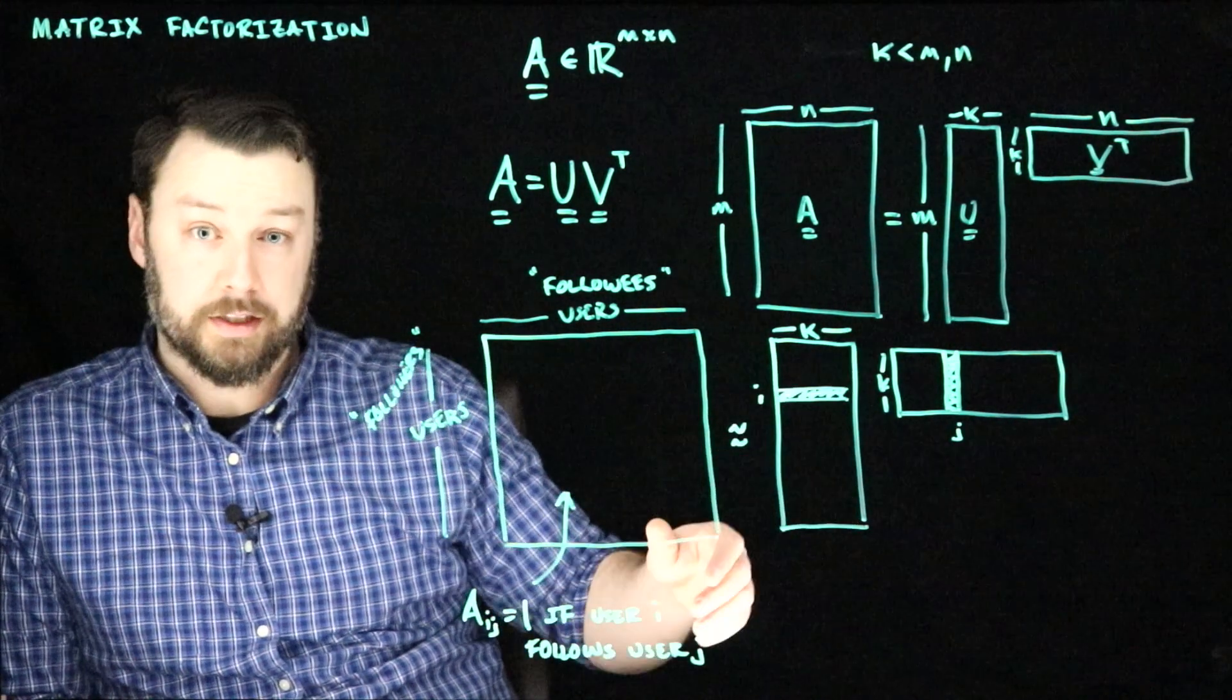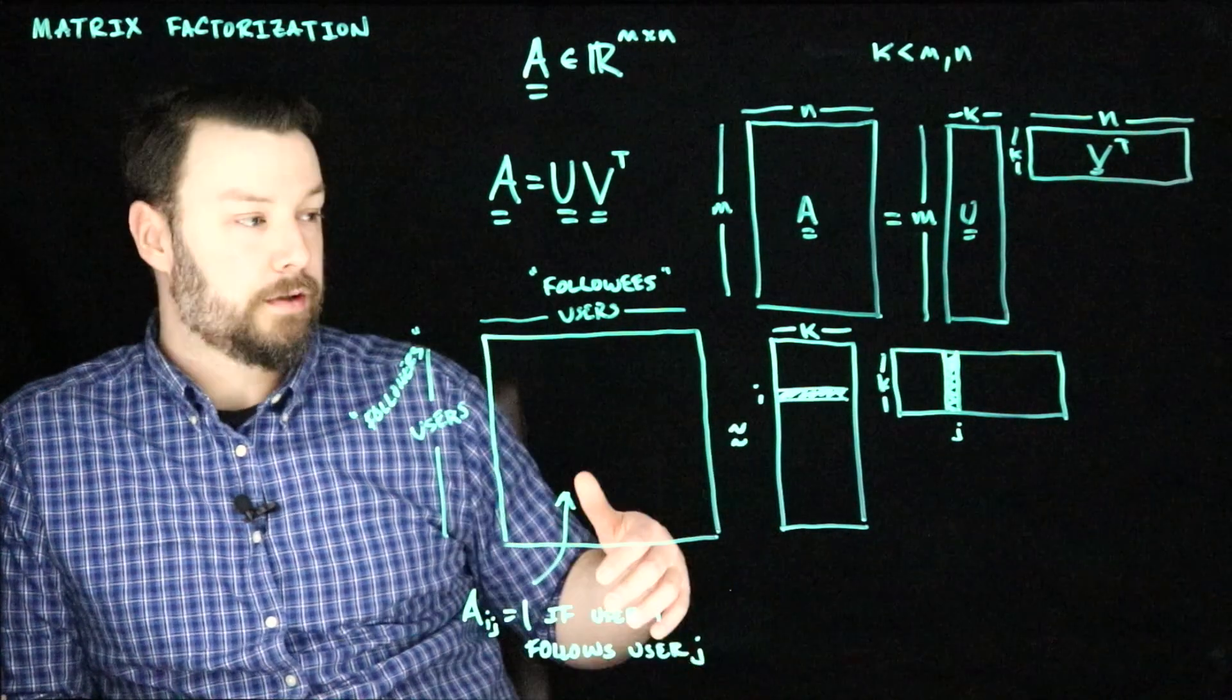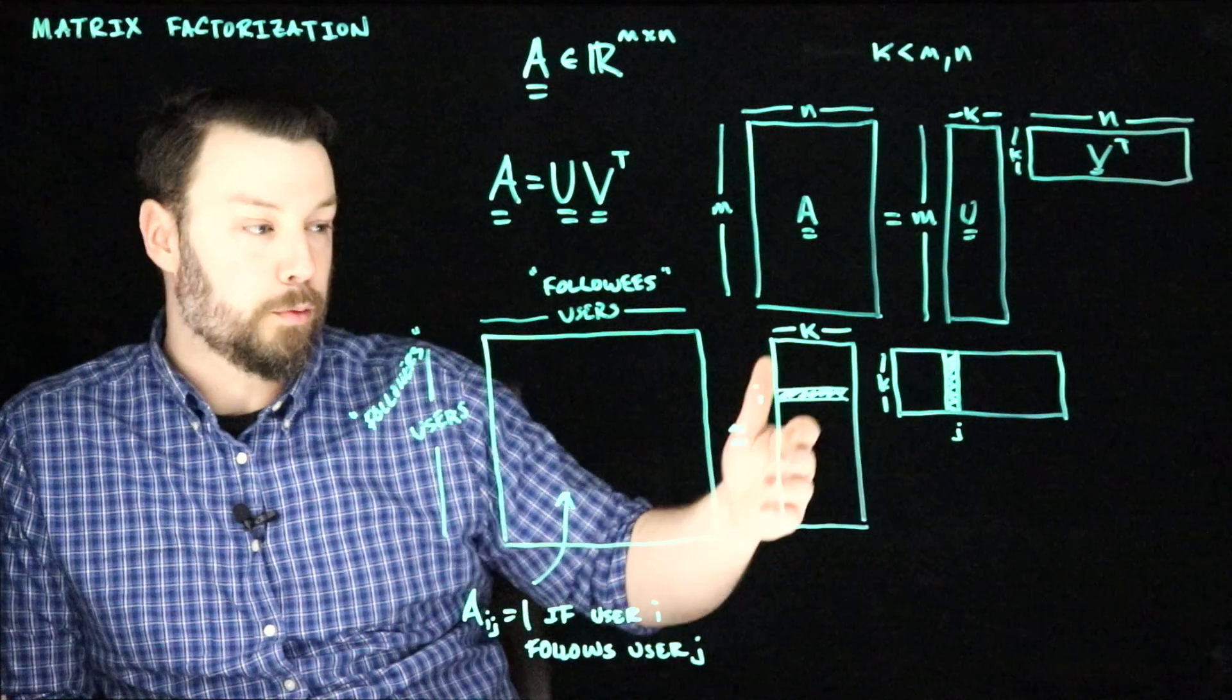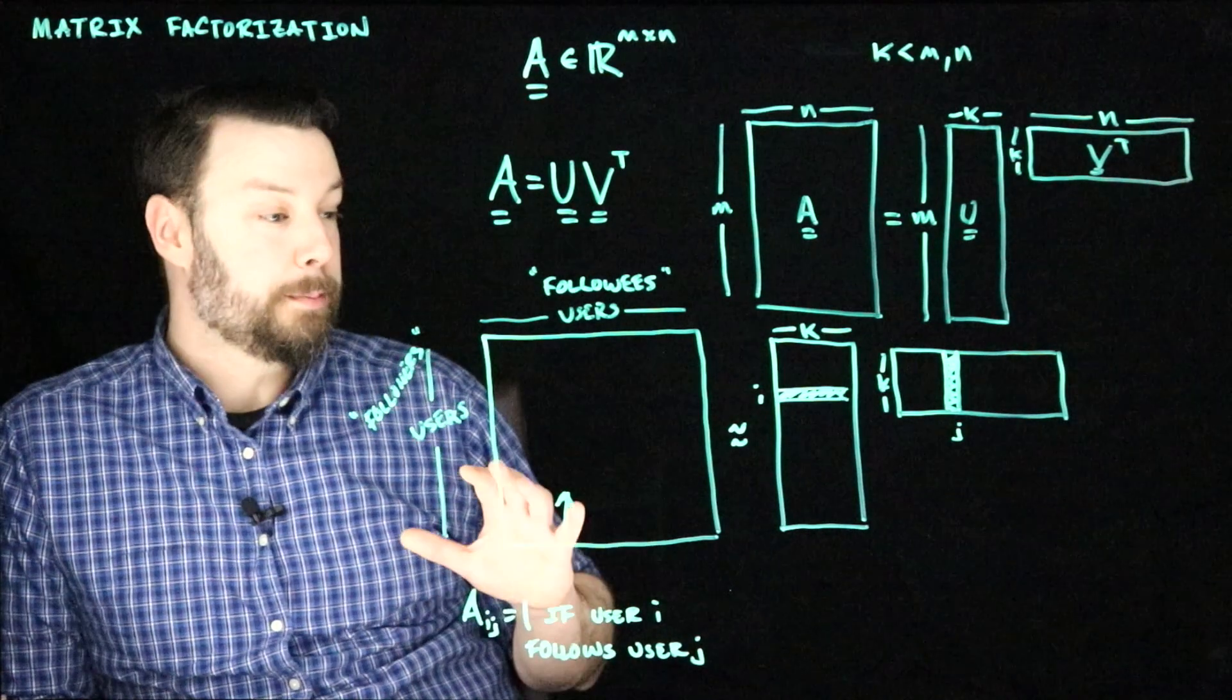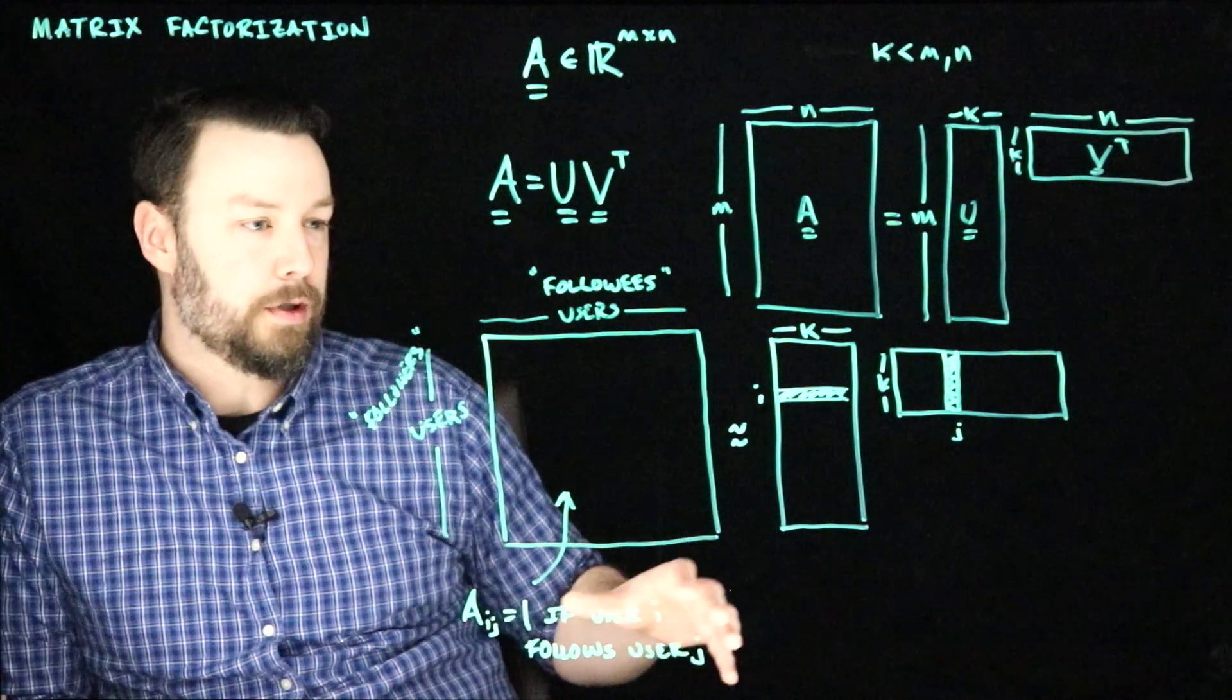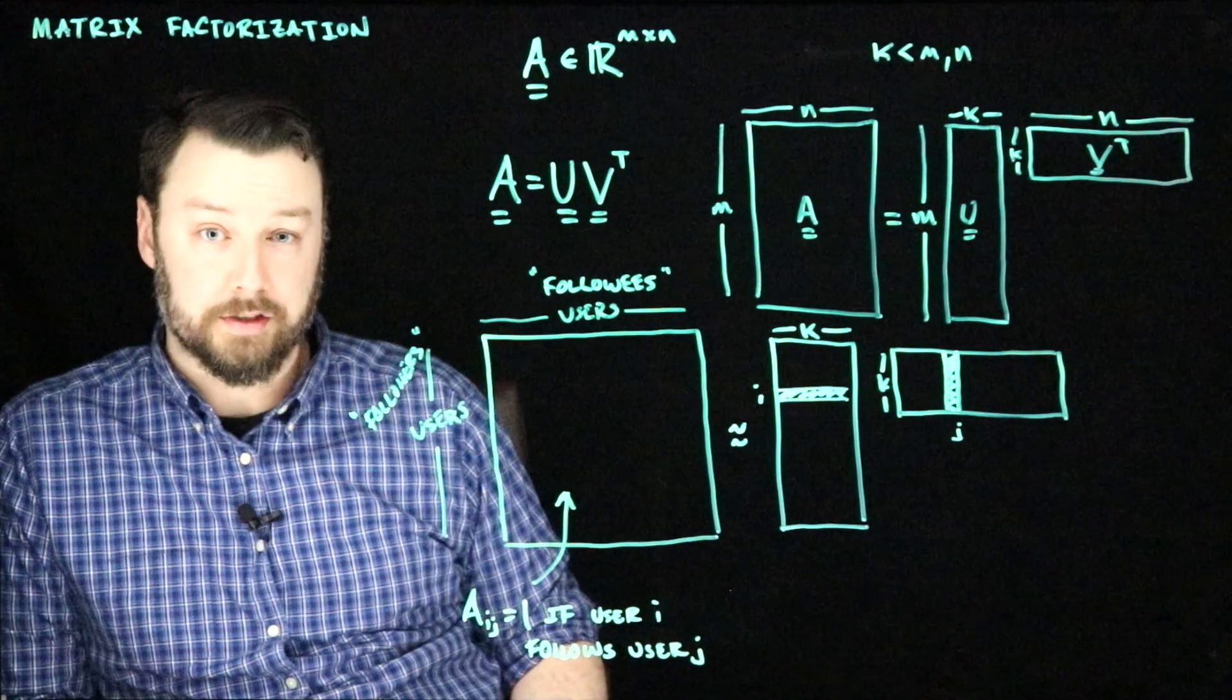...the rows of this user matrix will be someone's taste and the columns of the movie matrix would ideally represent different genres or directors or different properties of movies that would cause someone to be interested in it. The list of things like this goes on and on. People have employed these in lots and lots of different settings and not just recommendation systems, but lots of different problems that people can frame in terms of what's called a matrix completion task.